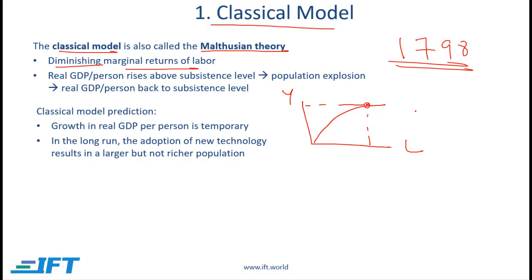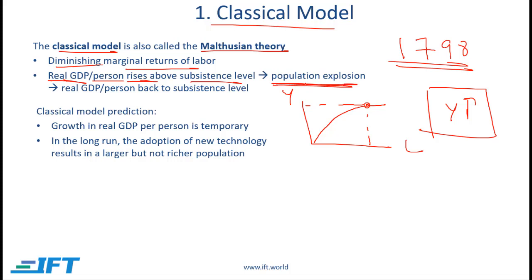Now in this situation, what if there is some new technology? So the plough is invented, or let's say an irrigation system is developed, which means that in our farms the overall output per person goes up. When we do have some technological innovation, the real GDP per person would rise above the subsistence level, but this would mean there is more output, more food. With more food we could have more people, so that would result in a population explosion and that would bring the real GDP per person back to the subsistence level.